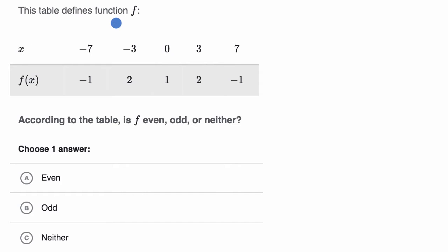We're told this table defines function f. For every x they give us the corresponding f of x. According to the table, is f even, odd, or neither? Pause this video and see if you can figure that out on your own.